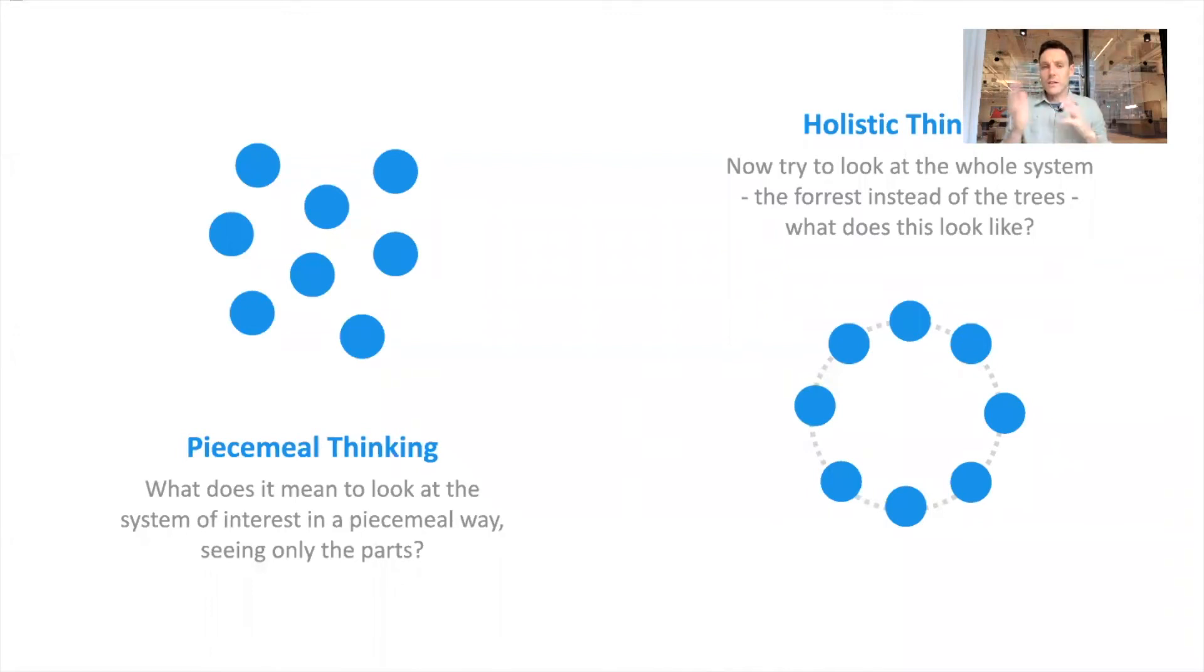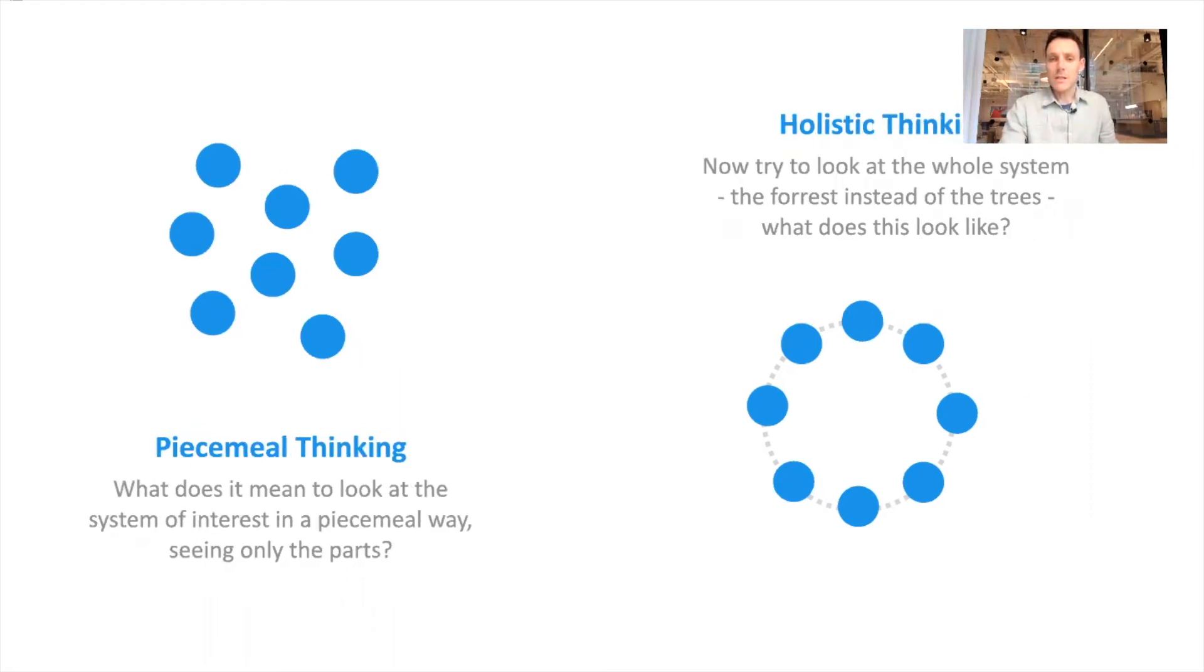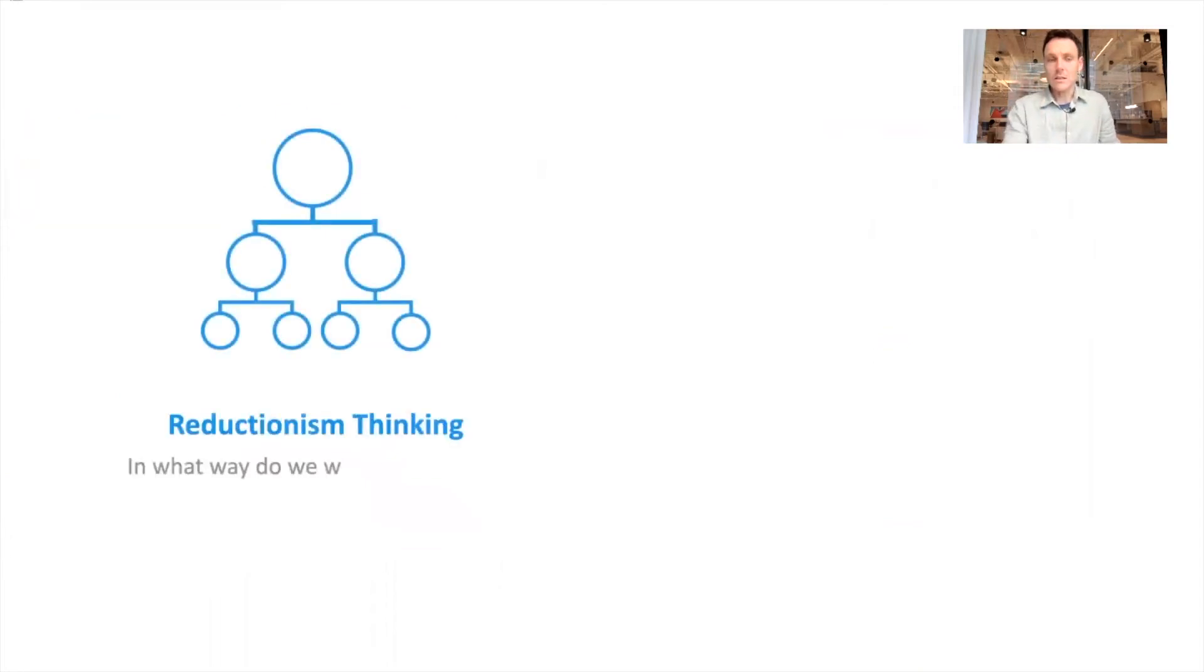So these are ways to help us, or methods, little methods to help us try and shift from this piecemeal view or ask what it looks like to look at the world like that, become aware of what it looks like to look at the world like that, and then try and shift it to a systems perspective. And this could be applied to any kind of system.